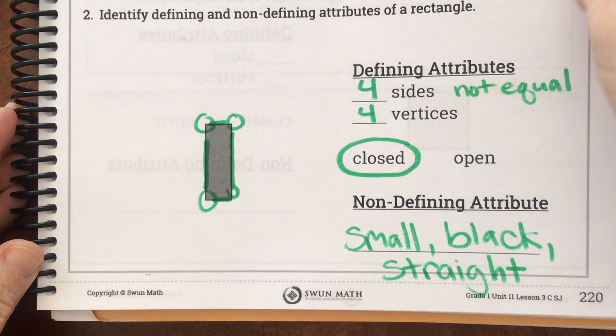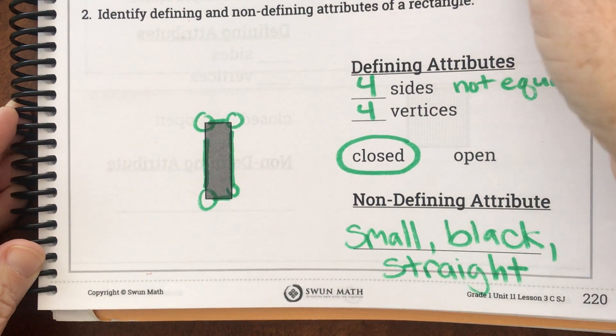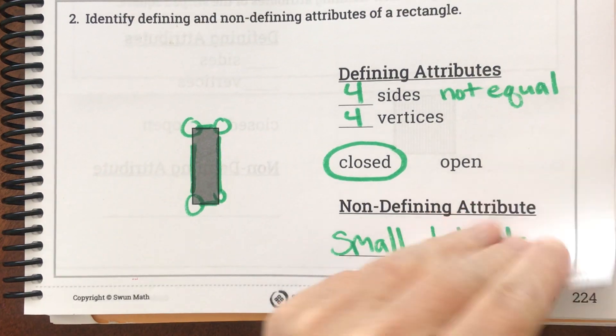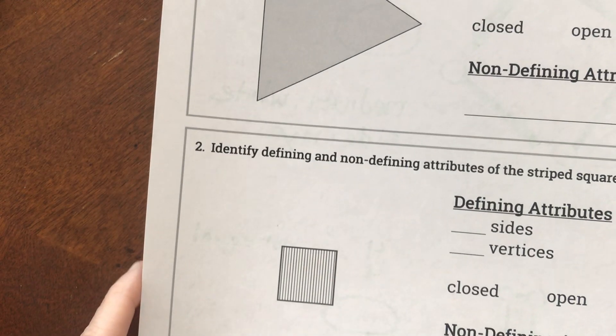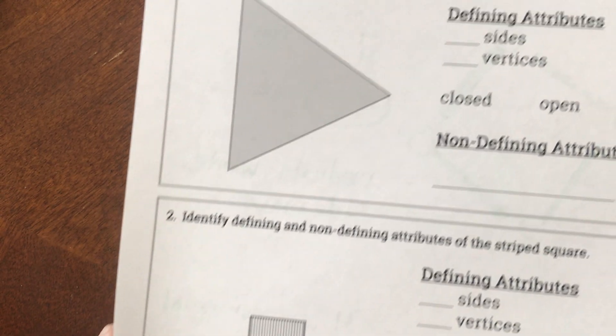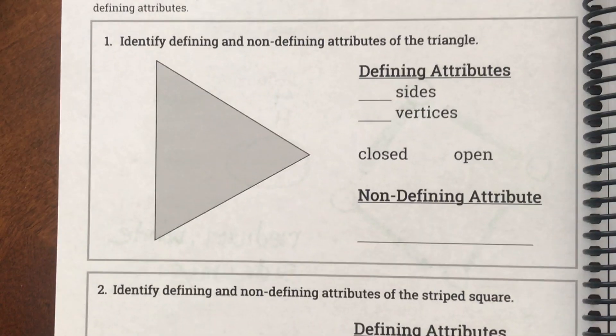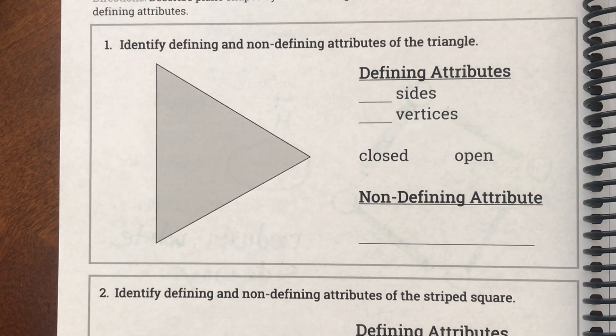None of those attributes help us figure out the name of the shape, so that's why we call those non-defining. Ladies and gentlemen, you are going to be turning the page and you have two to try today on your own. Have a nice day, bye!